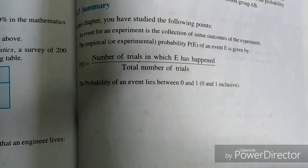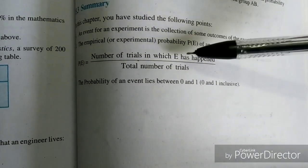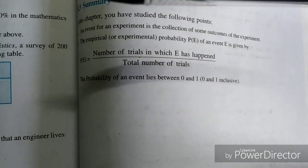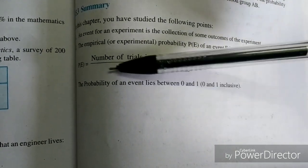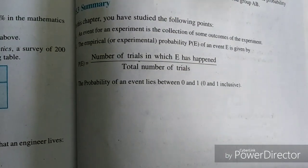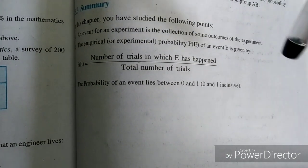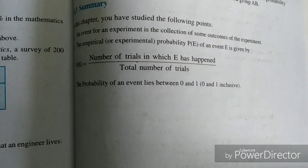Basically in this chapter you have a question about empirical probability, or in this summary you have a point where the probability of an event lies between 0 and 1. You can state it.